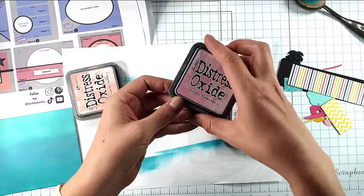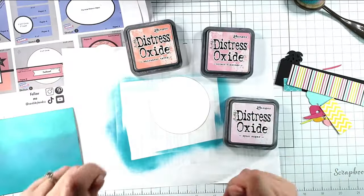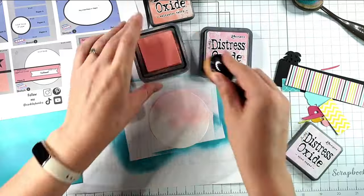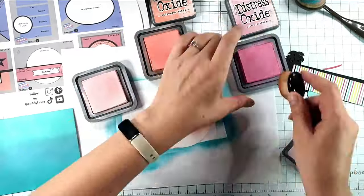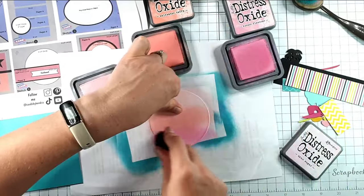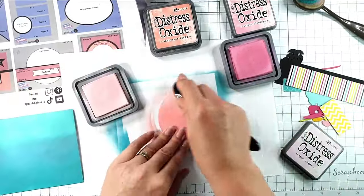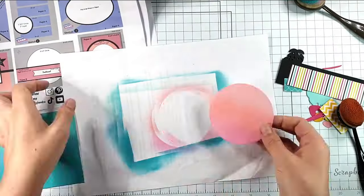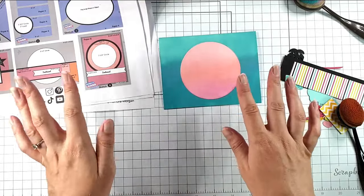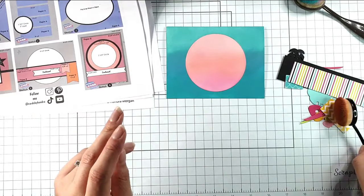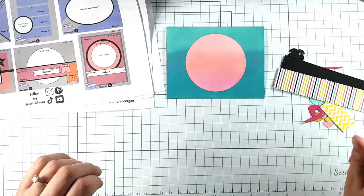So I've got Spun Sugar, Kitsch Flamingo and Salt Water Taffy for this one. So then there's my circle to go on there. I want to go with these kind of tropically type colors that sit back nicely with the papers.